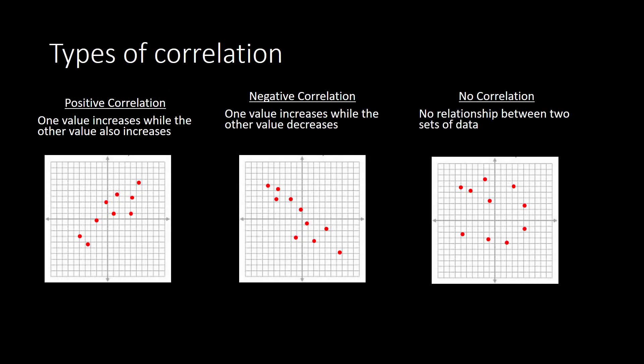There are types of correlation: positive, negative, and no correlation. Positive correlation is kind of like direct variation — as one value increases, the other value also increases. As we plot the points, they create a line with a positive slope. So if the points trend upward, this is going to be a positive correlation.